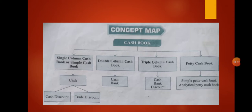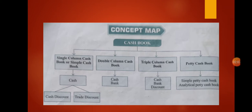What do we mean by single column cash book? In any business, many transactions take place involving cash every day, such as cash sales, cash purchases, payment to creditors, different expenses, and receipts from debtors. Cash book is the most important subsidiary book because it keeps the initial record of cash transactions of the business. Cash receipts are recorded on the debit side while cash payments are recorded on the credit side. Cash book is the book of original entry or prime entry.